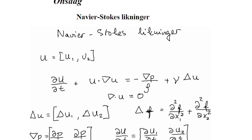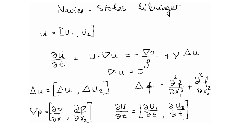Moreover, we have the gradient of p, where p is in fact the pressure inside the fluid. It's just the usual gradient, which is the partial derivative of the pressure in the first direction x1, and the second component contains the partial derivative of the pressure p with respect to the second variable.